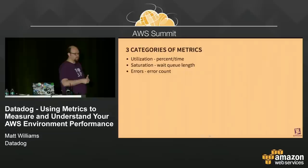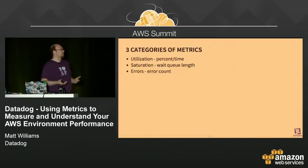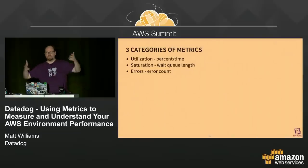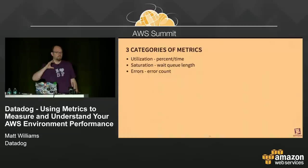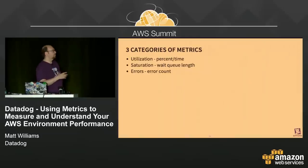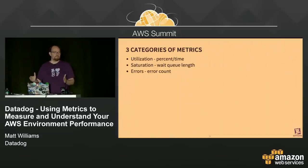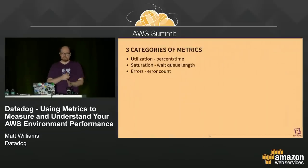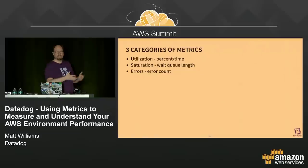The Brendan Gregg book talks about three categories of metrics: utilization — percent over time, so CPU utilization or disk utilization; saturation — looking at wait queue length, so how long is a queue before it gets processed; if that queue starts growing, obviously your resource is overly saturated. And then there's errors — just an error count, how many bad things happened in a given period of time.